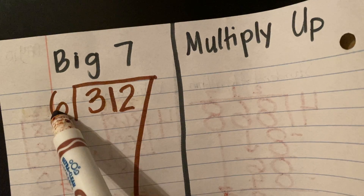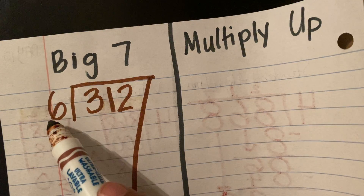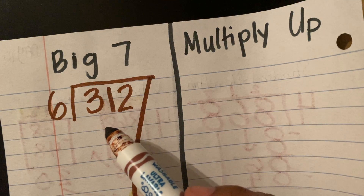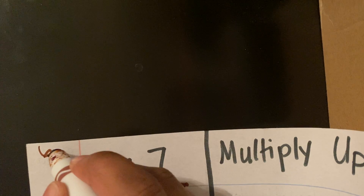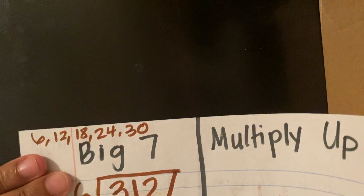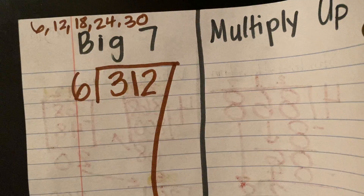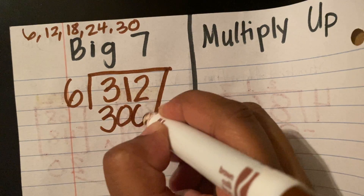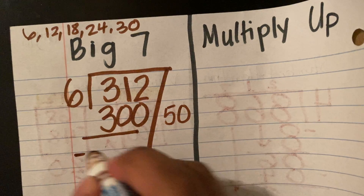We ask ourselves: can six go into three? No, but I want to use the whole number here — 312. How close can I get to 312 using six? If I skip count by six: 6, 12, 18, 24, 30. Remember our zero trick — six times five will get me 30, and I'm just going to add a zero to get 300. So six times 50. I'm going to subtract those out and I'm going to get 12.